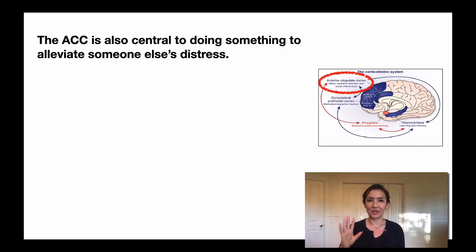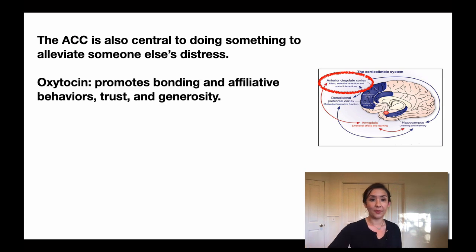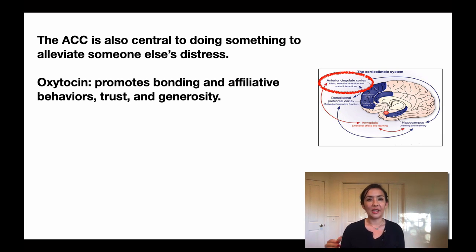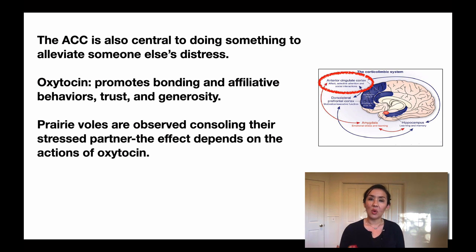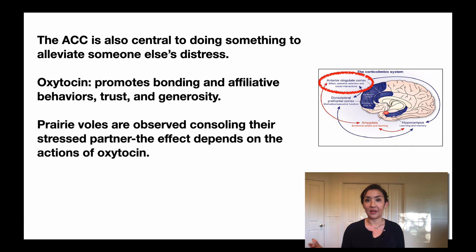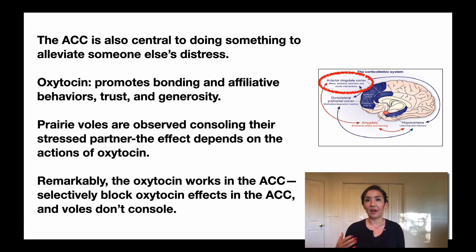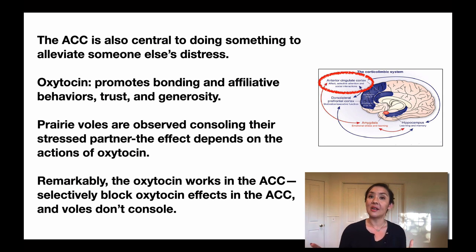That lecture did a very nice job describing the importance of the ACC in terms of individuals' pain, both physical and emotional. Now we're going to talk about how those same processes relate to understanding someone else's pain. First we have to talk a little bit about oxytocin — we've discussed it before, but it promotes bonding and affiliation behaviors such as trust and generosity. One really interesting study with prairie voles observed that they exhibited consoling behaviors towards their stressed partner, and this effect depended on oxytocin, working specifically in the ACC.